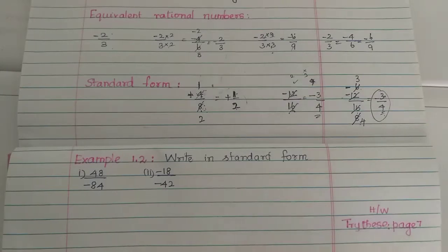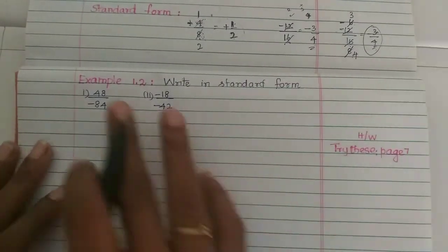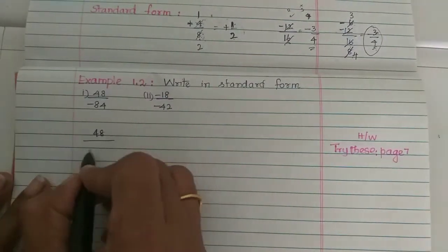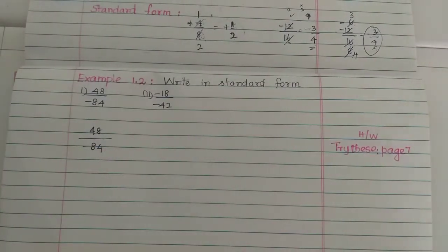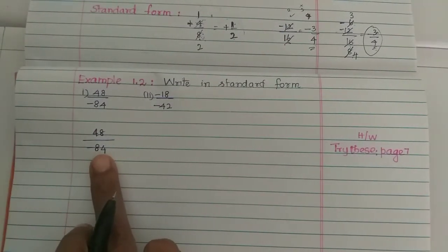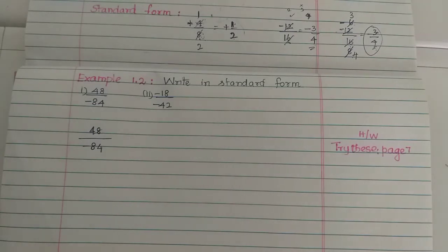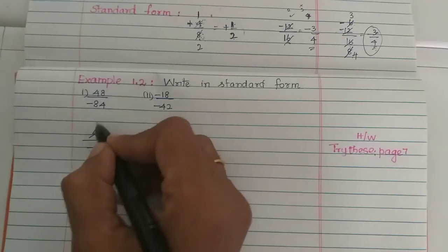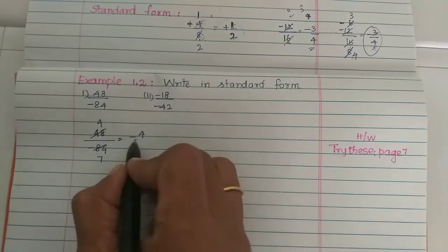Now let's look at Example 1.2 — write in standard form. We have 48 divided by minus 84. The GCF of 48 and 84 is 12, since 12 times 4 is 48 and 12 times 7 is 84. So the standard form is minus 4/7.